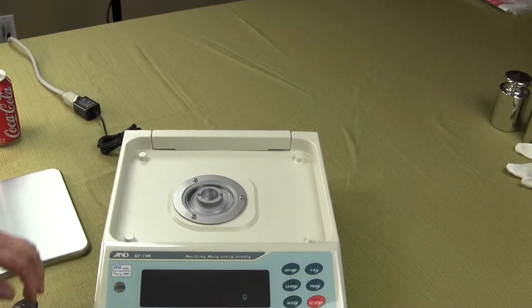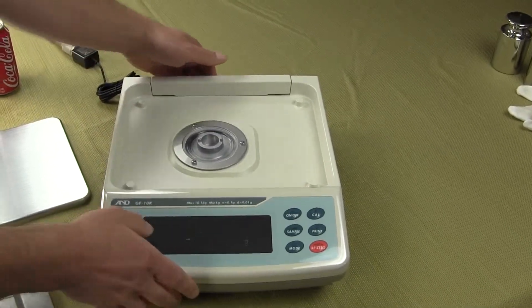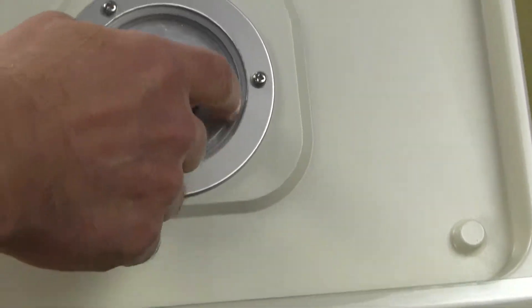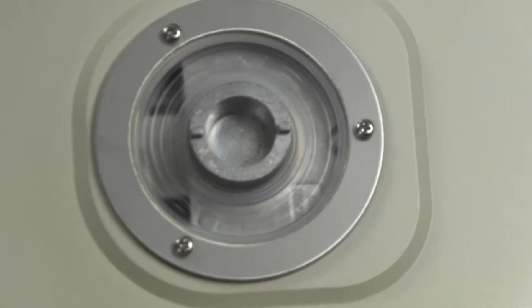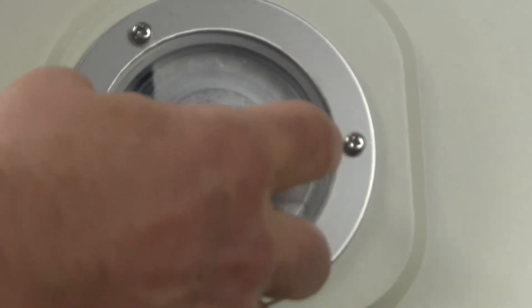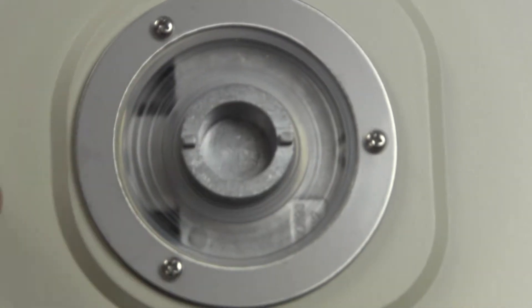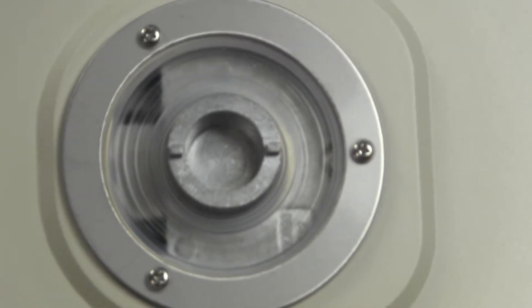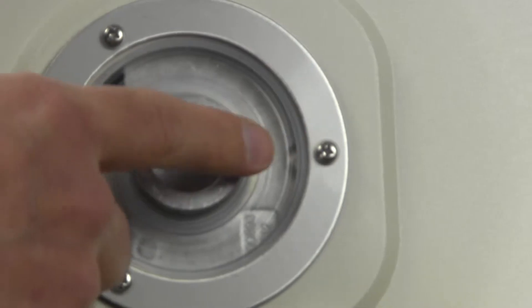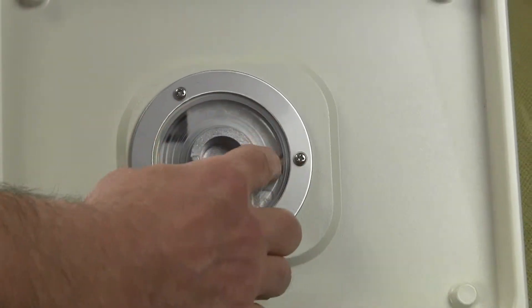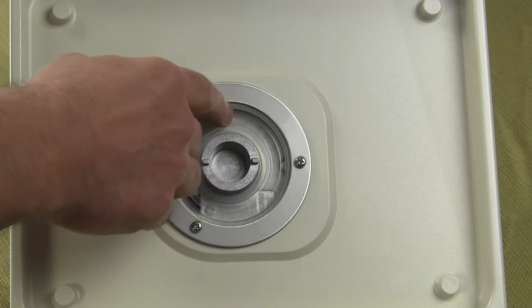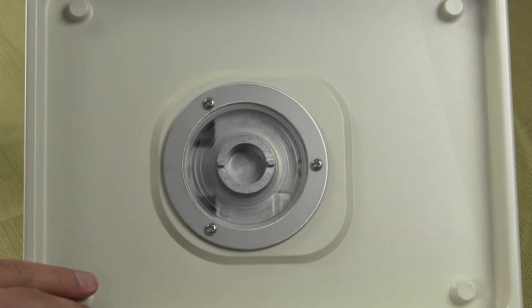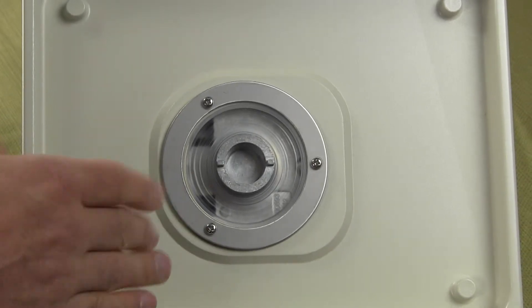Beneath the balance, you'll see this is the post. And we have a sealed membrane here. So this particular balance is IP65 rated. It's dust and water resistant. This is a force restoration balance using the super hybrid sensor. The weigh-cell post is right here. And all the way around, we have this silicon diaphragm. So this design enables this particular model to be used in dusty and high moisture environments.